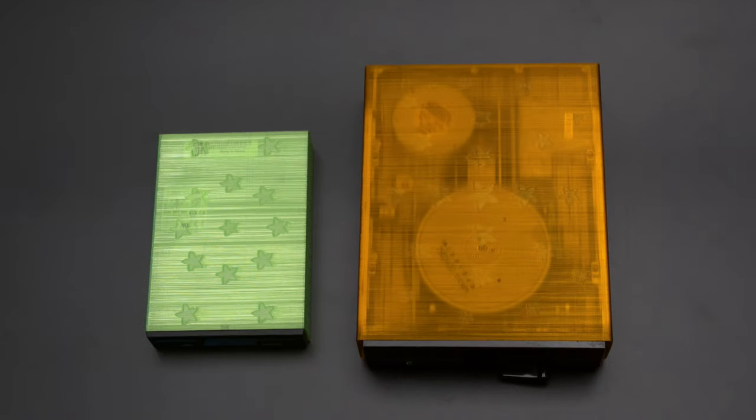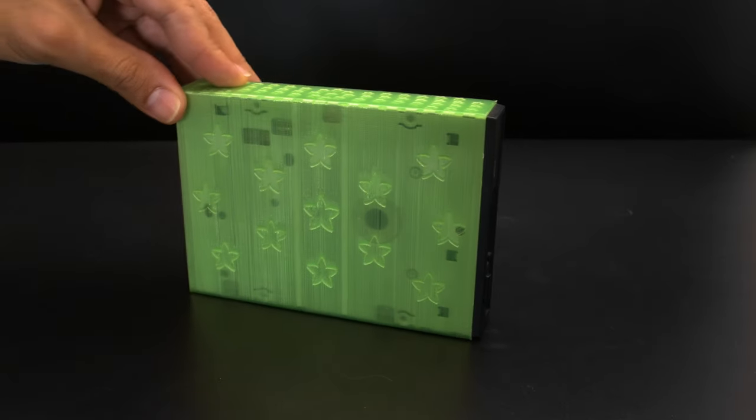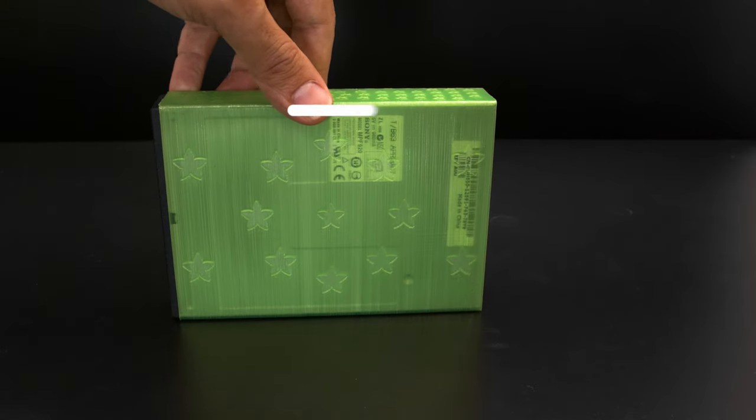We designed and 3D printed these cases for both 5.25 and 3.5 inch floppy drives. They're designed to slip over your standard floppy drives without any hardware and they feature an embossed pattern of little Adafruit logos.